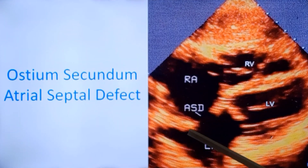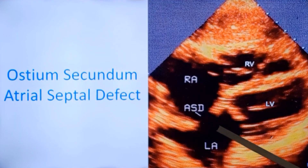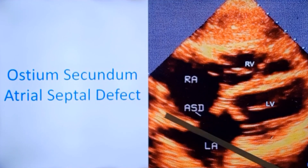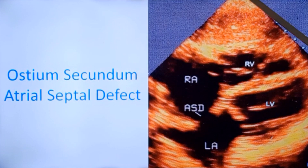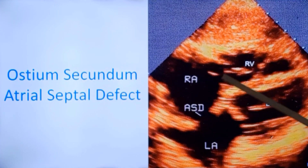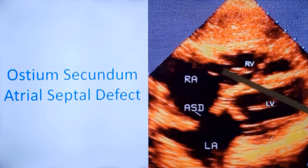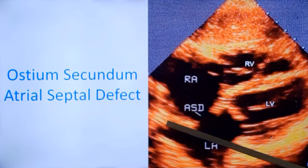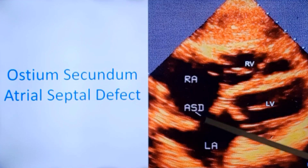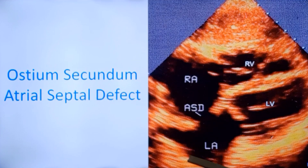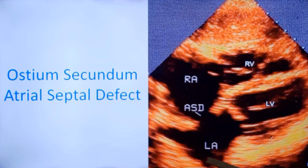This is an echocardiogram in ostium secundum ASD. You can see that the defect is in the middle of the inter-atrial septum. This is the subcostal view, which images the inter-atrial septum best because the septum is perpendicular to the image plane — that is, the transducer is sending a beam like this and the septum is almost perpendicular. That is the best way to image a structure in two-dimensional echocardiography.